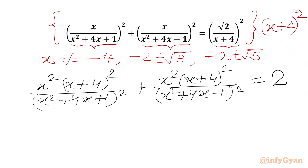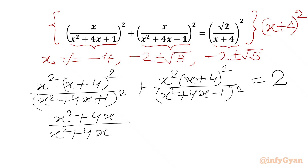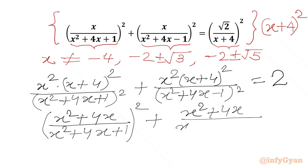Now we can club our bases since the exponents are the same. We will multiply x with (x + 4), giving x² + 4x over (x² + 4x + 1), whole squared. Similarly, we multiply x with (x + 4) to get x² + 4x, and the denominator is (x² + 4x - 1), whole squared, equal to 2.